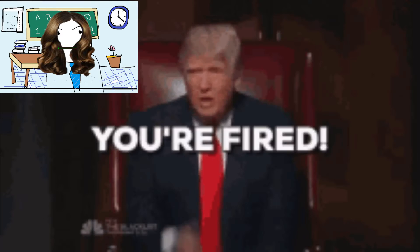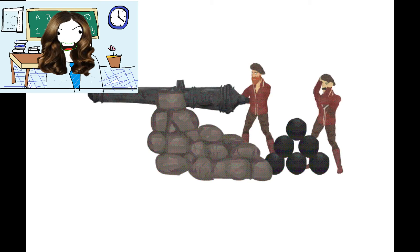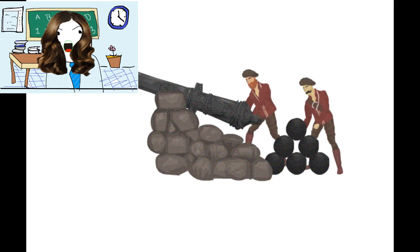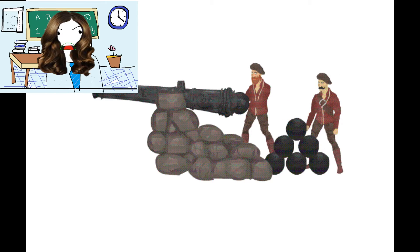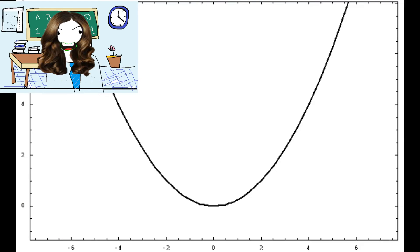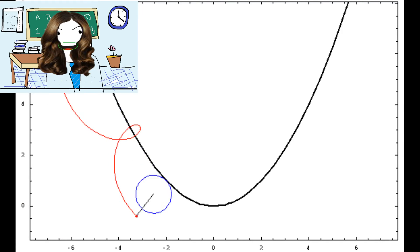Why is this important? Well, besides letting us calculate just how far a home run was hit, parabolic curves have important implications in everything from suspension bridges to car headlights to satellite dishes.